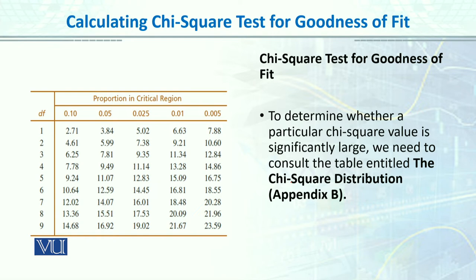After forming hypotheses and calculating degrees of freedom, the next step is to look up the critical value from the chi-square table — just like we looked up T and F values. The chi-square table is in Appendix B of Gravetter's book. For the upcoming example, degrees of freedom = 3 and alpha = 0.05, giving a critical value of 7.81. We then compare our calculated value against this table value.